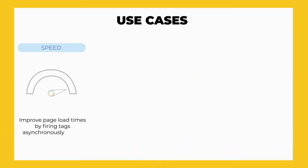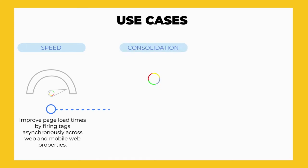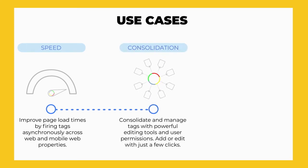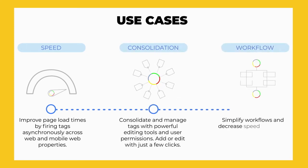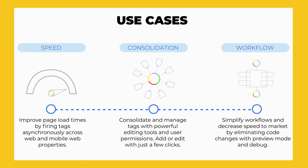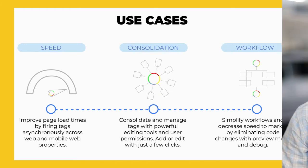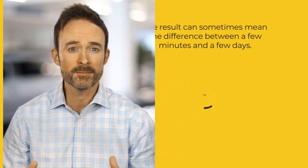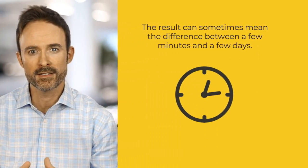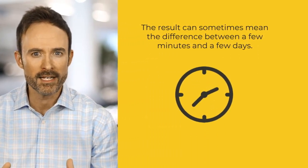There are a number of use cases for dealership websites including speed and improving load times, consolidating and managing your tags all in one place, and workflow simplification to eliminate the need for ongoing source code edits by your web provider when changes are required. The result can sometimes mean the difference between a few minutes and a few days.